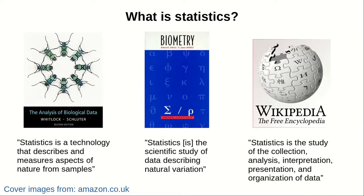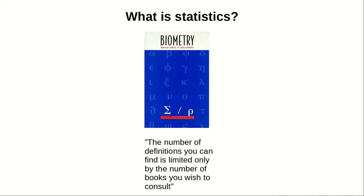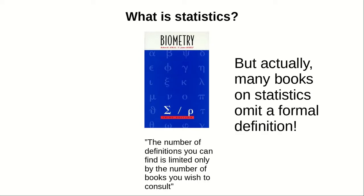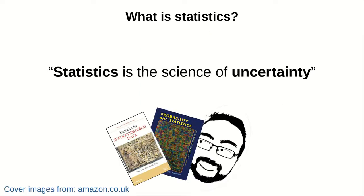In Wikipedia, you can find statistics defined as the study of the collection, analysis, interpretation, presentation, and organization of data. These definitions look similar but are a bit different. Sokal and Rolf themselves say in their textbook that the number of definitions you can find is limited only by the number of books you wish to consult. Many books on statistics even omit a formal definition. Here, I'll give you another definition which I think is simpler but makes much more sense: statistics is the science of uncertainty. Simply, because we can never be 100% sure of any outcome in nature, we need to quantify the uncertainty of our observations. And that's why statistics is used.